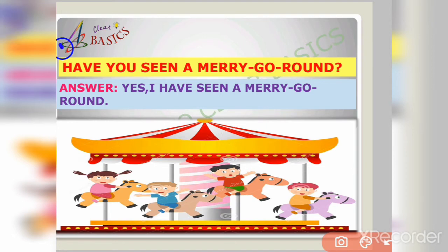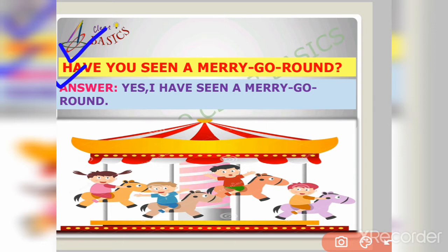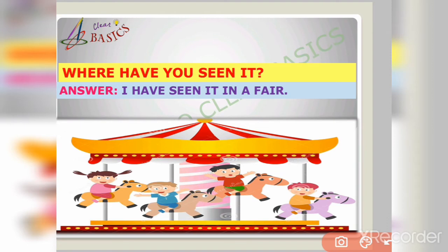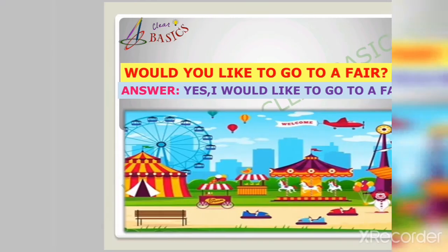Can you tell me, have you seen a merry go round? Take your time to think and then comment your answer below. My answer is yes, I have seen a merry go round. I will provide more examples and worksheets on our Facebook and Telegram groups, so don't forget to join — the link is in the description box below. Our next question is: where have you seen it? My answer is I have seen a merry go round at the fair.